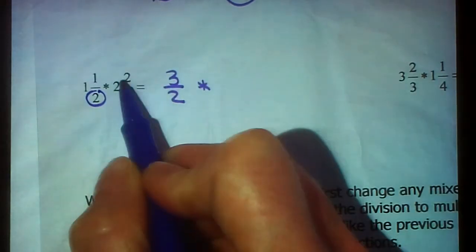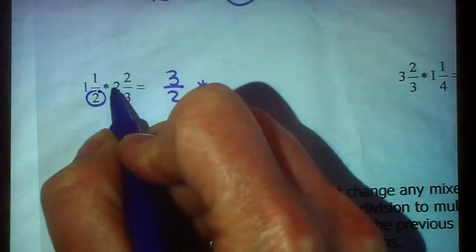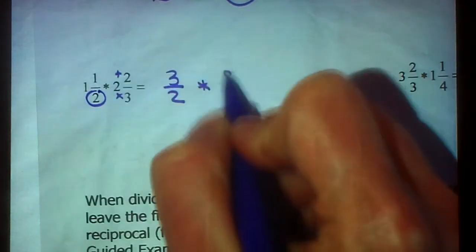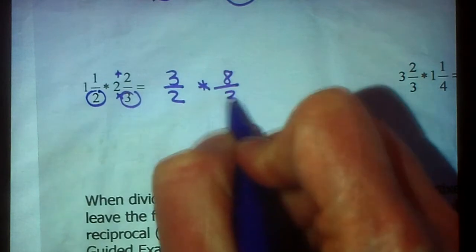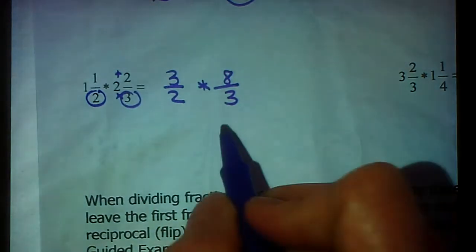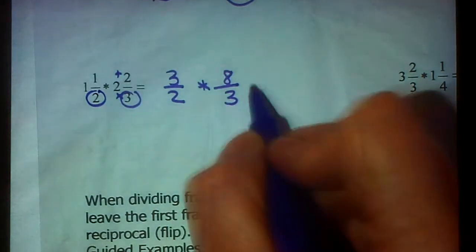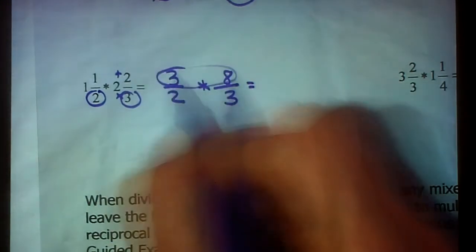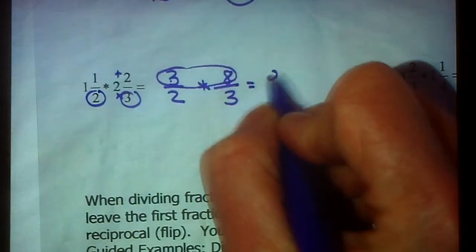To change 2 and 2 thirds, we take 3 times 2, which is 6, plus 2, which is 8. Keep your denominator the same. So you have 3 halves times 8 thirds. This is just the way we want it, improper.